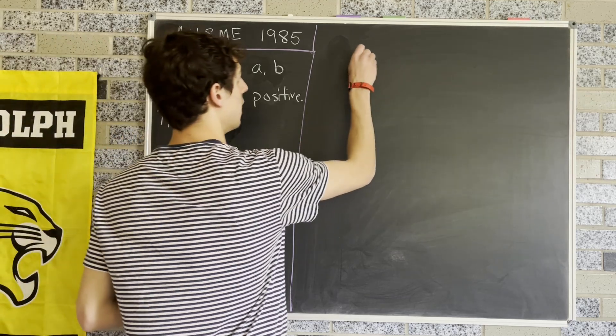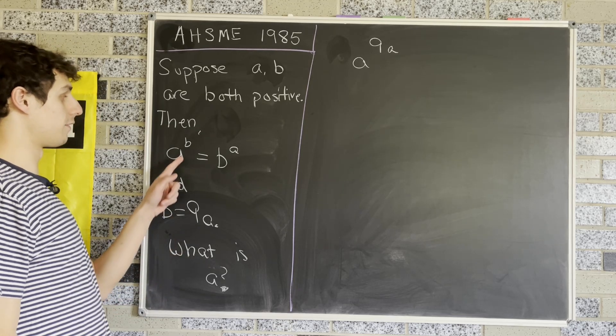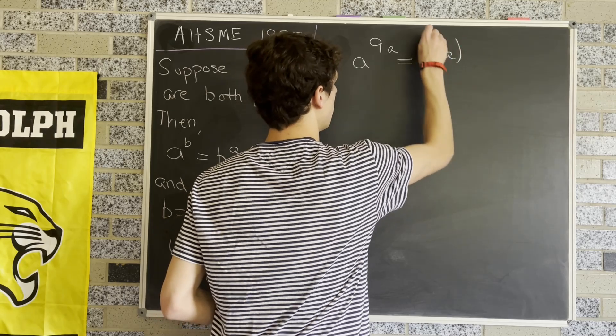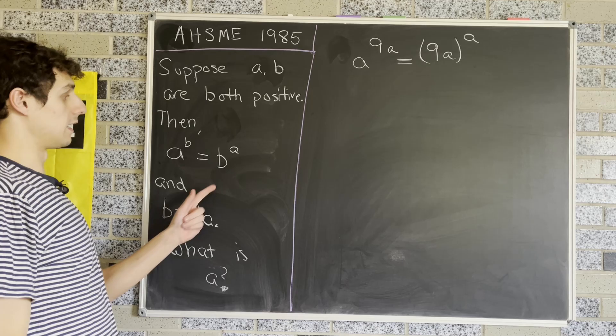We get A^(9A) by plugging in 9A for B on the left-hand side, which equals (9A)^A on the right-hand side by plugging in 9A for B.